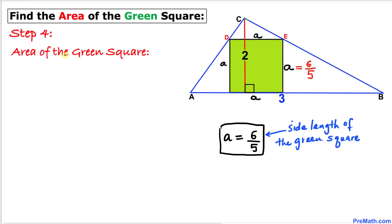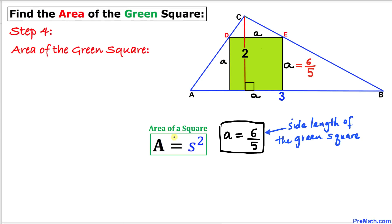Here's our final step. Let's calculate the area of this green square. Here's the area of square formula: A equals S squared where S represents the side length of the square. In our case the side length is 6 over 5, so our area is going to become A equals 6 divided by 5 squared.